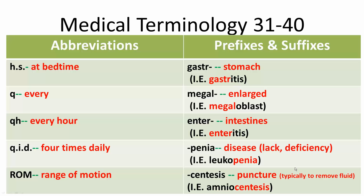The first abbreviation is H.S., which means at bedtime. Next is Q, that means every. QH is every hour. Q.I.D. means four times daily. Q.R.O.M. is range of motion.